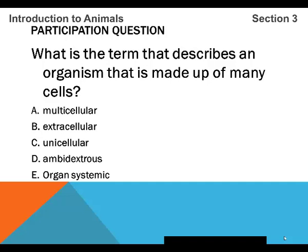Remember, whenever doing multiple choice questions, always eliminate the wrong answers first. Organ systemic is definitely not a correct answer. Ambidextrous is when you can write with both hands — also not a correct answer.